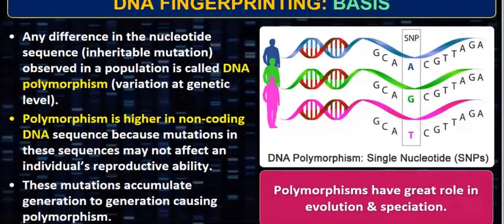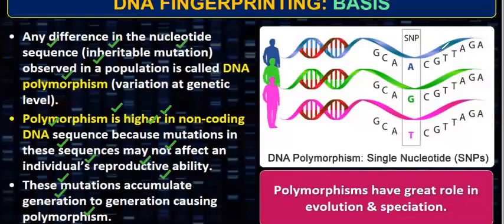Any difference in the nucleotide sequence that is an inheritable mutation observed in a population is called DNA polymorphism — variation at a genetic level. Polymorphism is higher in non-coding DNA sequences because mutations in these sequences may not affect any individual's reproductive ability. These mutations accumulate generation after generation, causing polymorphism. This is a single nucleotide difference — a single nucleotide polymorphism — and it does not affect any genotype because it is present in the non-coding DNA.